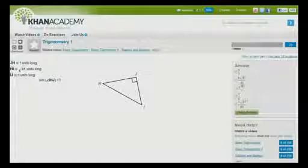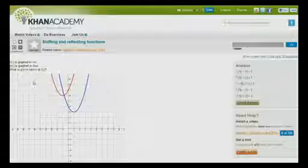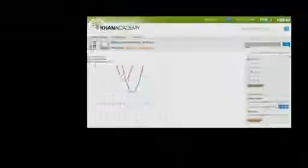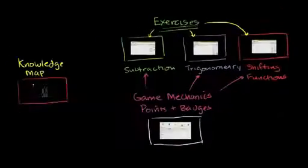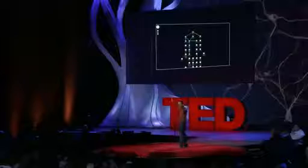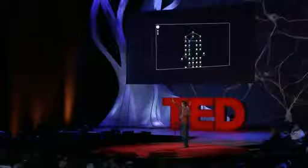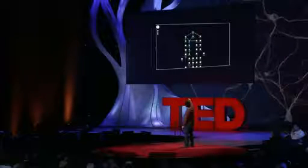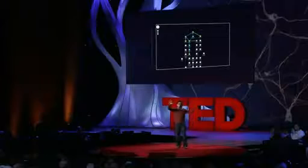This is just another one of the modules — this is trigonometry, this is shifting and reflecting functions. They all fit together. We have about 90 of these right now. You can go to the site right now; it's all free, not trying to sell anything. But the general idea is that they all fit into this knowledge map. That top node right there — that's literally single digit addition. It's like one.